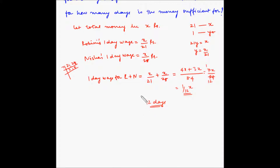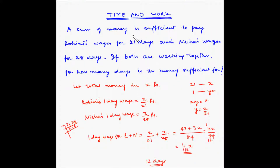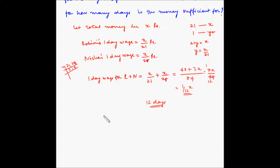Now we can also solve this using a faster and quicker method. The money is sufficient to pay Rohini's wages for 21 days and Nisha's wages for 28 days. We can treat these as the number of days each takes to complete the work individually, and the money is sufficient to pay for the entire work. When both work together, we need to find in how many days they complete the work.